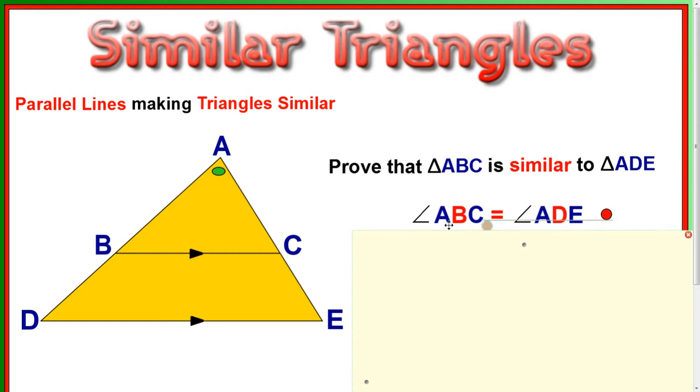So ABC is the one at B, A to B to C, so that's this one there. And ADE is here at D. The letters in the middle are where the angle's at. Now why are these the same?